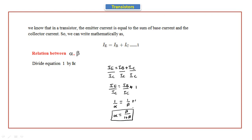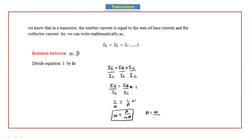This is the relationship of alpha and beta in terms of alpha. Now the same equation written in terms of beta gives: beta equals alpha divided by (1 minus alpha). This is the relationship between alpha and beta in terms of both alpha and beta.